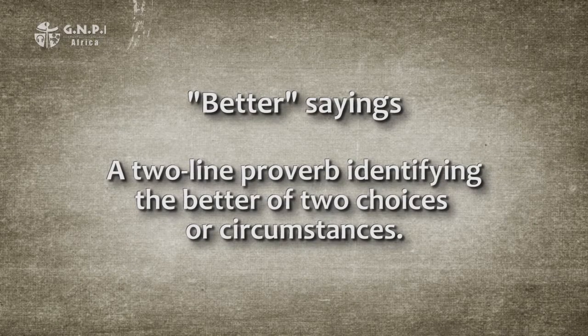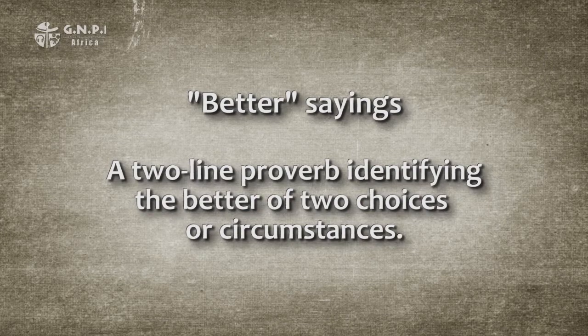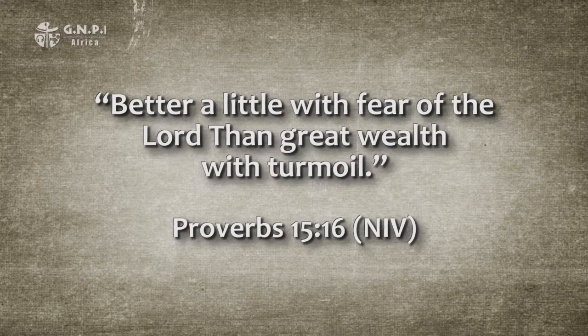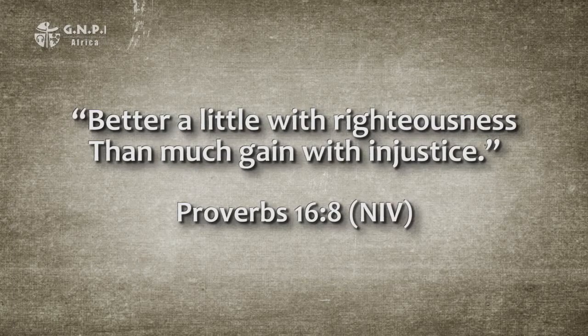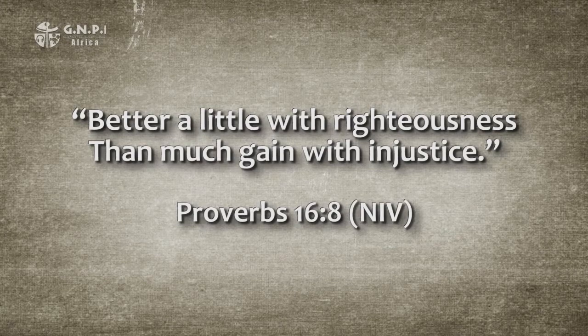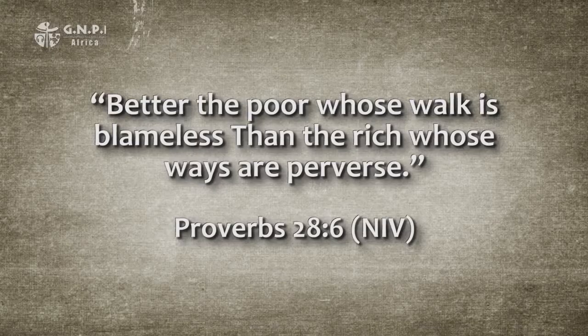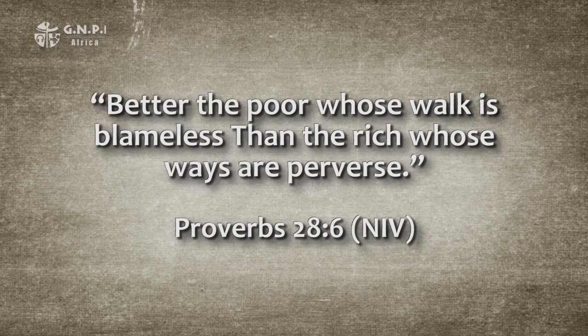A fifth kind of proverb is what I call better sayings. This proverb is normally a two-line proverb identifying the better of two choices or circumstances. Almost all of these proverbs take two comparisons where the answers would be obvious and then pair them against each other with a slight twist to force the student to prioritize the better of the two good options. They are easily identified because they begin with the word 'better.' Nearly all of these proverbs are found in chapters 15 to 21. For example, chapter 15 verse 16: 'Better a little with fear of the Lord than great wealth with turmoil.' Chapter 16 verse 8: 'Better a little with righteousness than much gain with injustice.' And chapter 28 verse 6: 'Better the poor whose walk is blameless than the rich whose ways are perverse.'